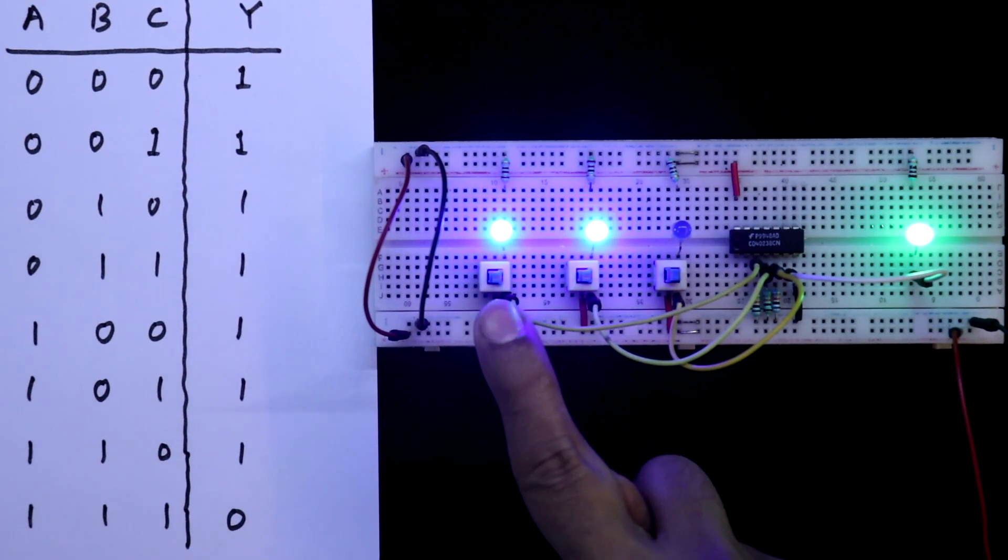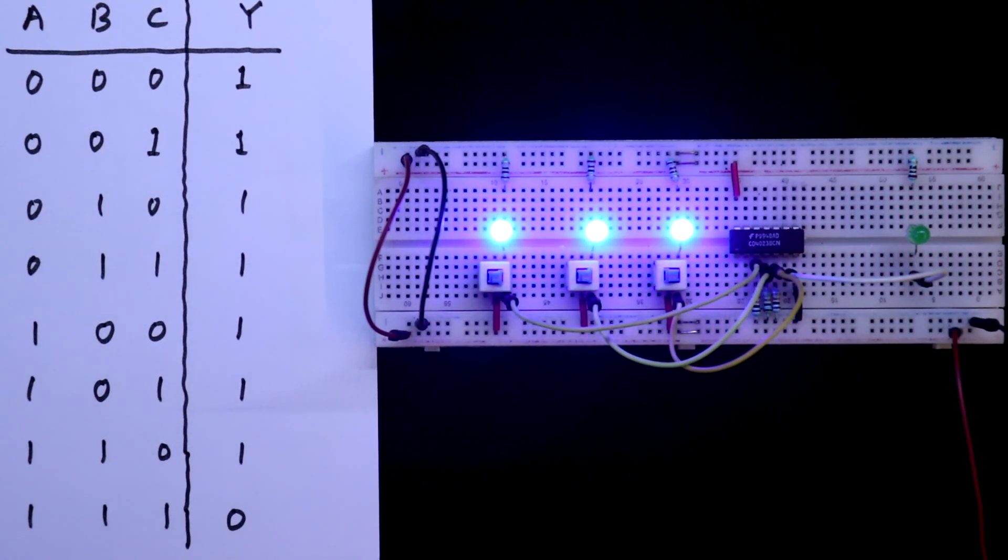1 1 0. Then we are getting the output as 0. So this is how CD4023 IC works.